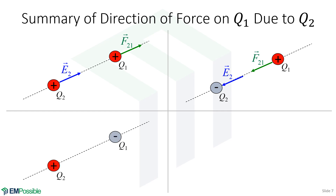On to the case where the first charge is negative and the second charge is positive. Starting at the second charge — it's positive, so the electric field will diverge from it, pointing to the upper right. Looking at the first charge — that is negative, so the force will be in the opposite direction of the electric field. Therefore, the force on the first charge is in the lower left direction.